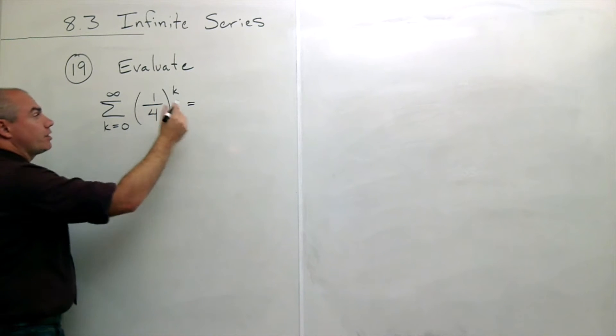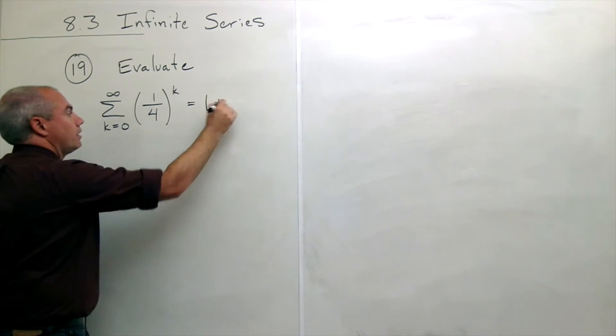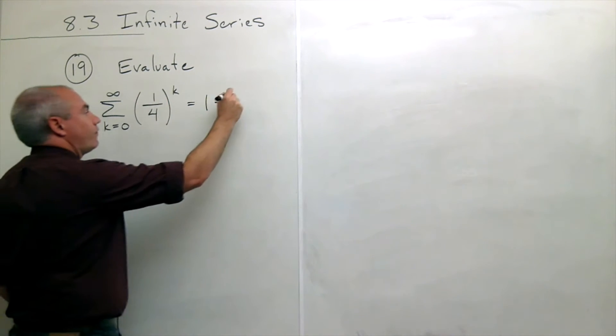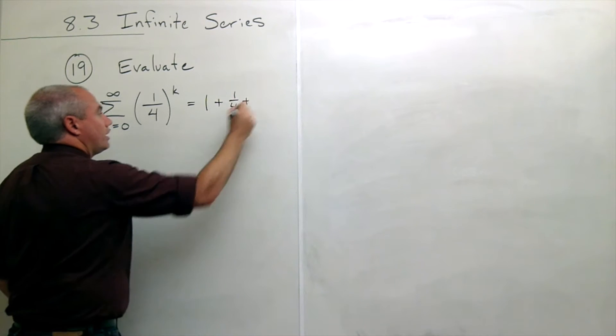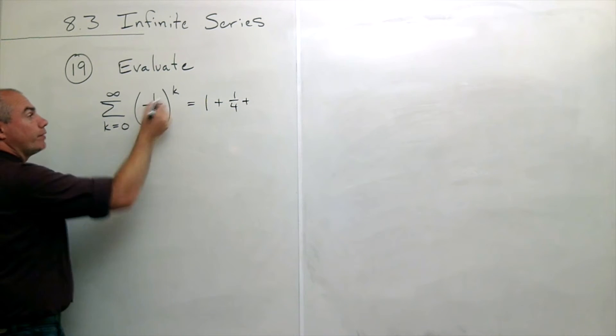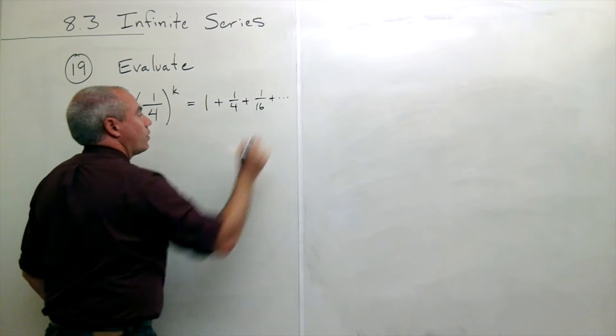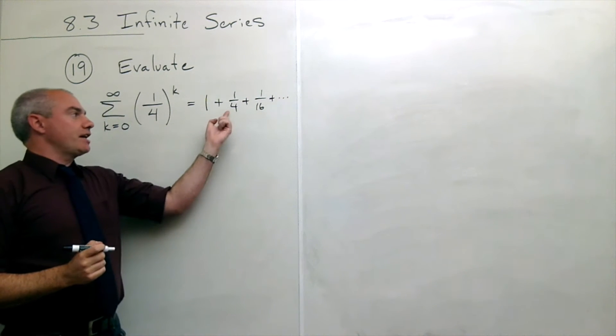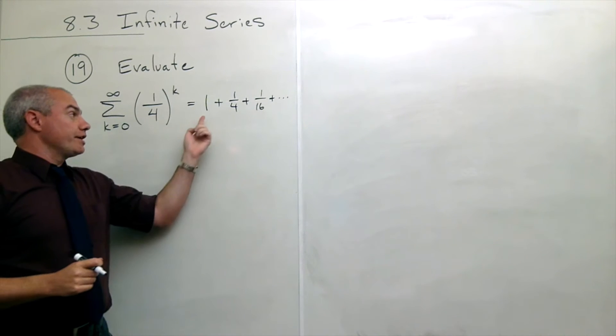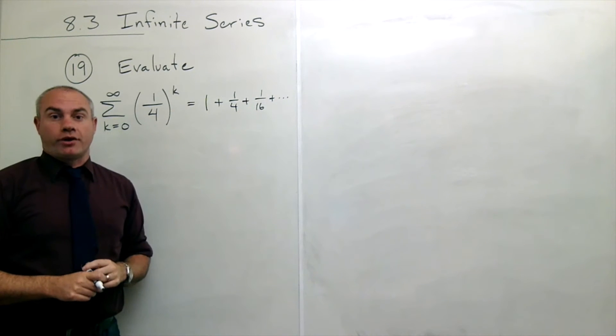If k is 0 we get 1. If k is 1 we get a fourth. If k is 2 we get a sixteenth and so on. In other words every time I move to the next term of the series I multiply by one fourth.